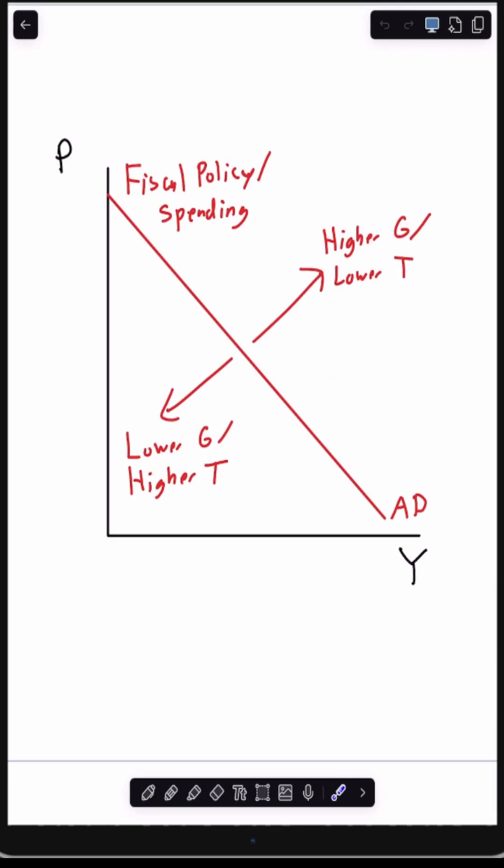On the other hand, the aggregate demand curve is moved by fiscal policy or just spending in general. So if the government decides to spend more or lower taxes then this curve is going to shift to the right and if the government decides to spend less or tax people more then this curve is going to shift to the left.